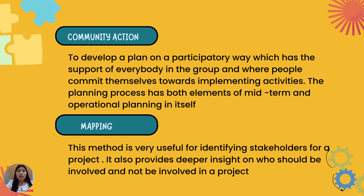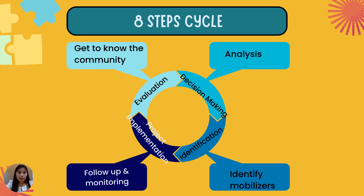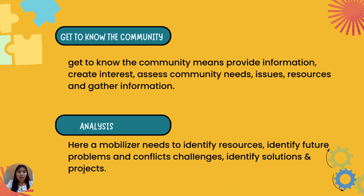To give us a clearer overview, our handbook provides an eight-step cycle. Those eight steps are: get to know the community, analysis, decision making, identification, identify mobilizers or leaders, project implementation, follow-up and monitoring, and finally evaluation.